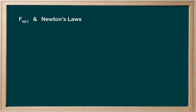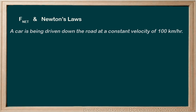For example, let's consider this situation. A car is being driven down the road at a constant velocity of 100 kilometers per hour. So let's start with a free body diagram.